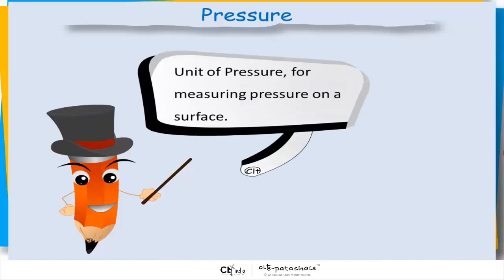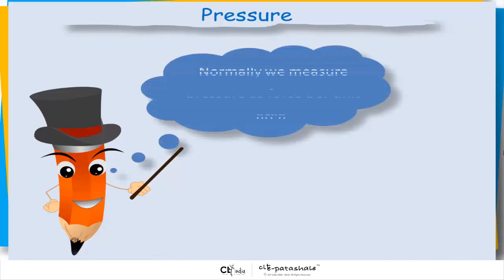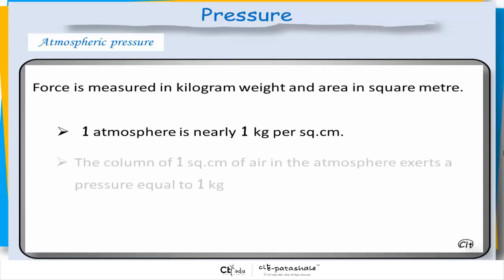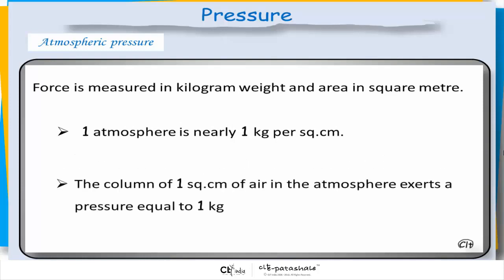Unit of pressure for measuring pressure on a surface. Normally we measure pressure as a force per unit area. Force is measured in kilogram weight and area is measured in square centimeter. So, 1 atmosphere is nearly 1 kg per square centimeter. The column of 1 square centimeter of air in the atmosphere exerts a pressure equal to 1 kg.